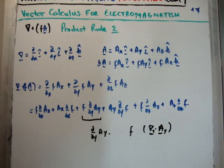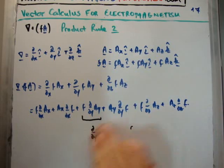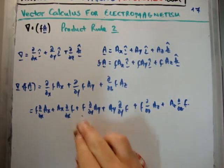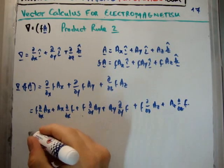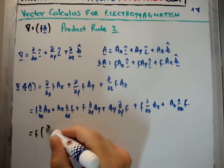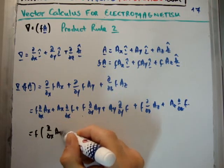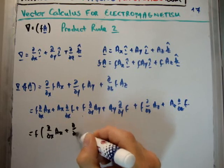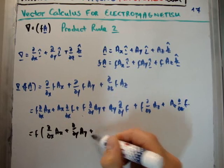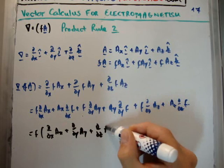So what that suggests to me is that I need to group all these like terms. How I do this is I factor out f. Let's look at all the terms which have f at the start. So del/del x a sub x, plus del/del y a sub y, plus del/del z a sub z.